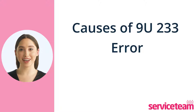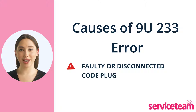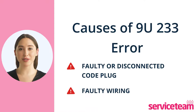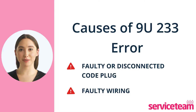Let's see what causes this error. A faulty or disconnected code plug is the main cause of the 9U233 error. The code plug has crucial boiler information, and when it's faulty, you see this 233 error code. The next potential cause is faulty wiring within the system. To accurately diagnose this issue, you need to get professional support.